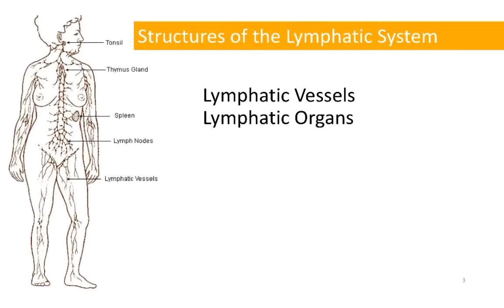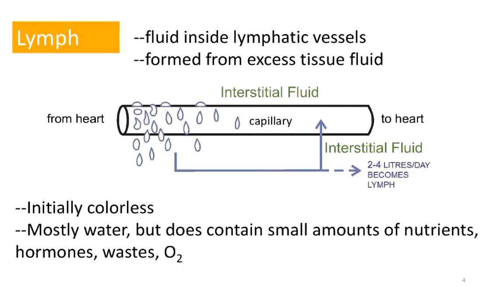When we talk about this system, there are two major categories of structures and organs: vessels, and then more classic organs like the spleen, lymph nodes, the thymus gland, and tonsils. Lymph is fluid connective tissue, as is blood, and lymph is simply the fluid inside lymphatic vessels.